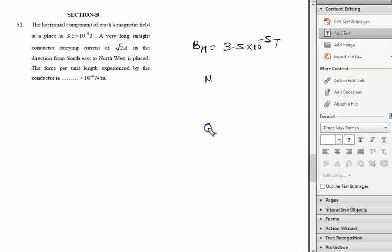This is north, south, east, west. So this conductor carries current in the direction from southeast to northwest like this, and the current flowing is given by √2 ampere.